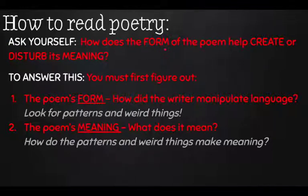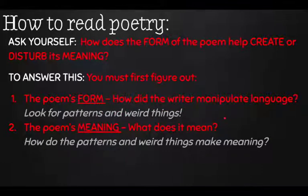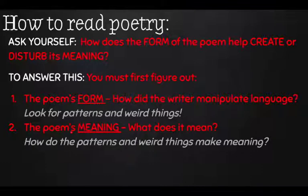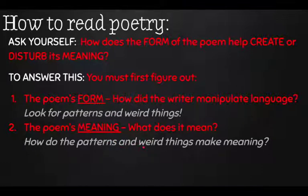First, you ask yourself: how does the form of the poem help create or disturb its meaning? You have to figure out the form, the patterns, and how that form creates or disturbs its meaning. To answer this, you must first figure out: what is the form? How did the writer manipulate language — how did the writer use the language for his or her own purposes? Look for patterns in the rhyme, in the meter, in the form. Notice if there are weird things going on. And also figure out: what is the meaning of the poem? How do the patterns and weird things make meaning? This is the most important thing when writing about literature — not listing the metaphors or the irony, but figuring out the meaning, the purpose, what the author is communicating.